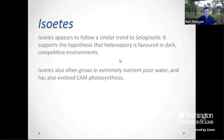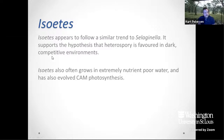Overall, Isoetes appears to follow a similar trend to Selaginella and supports the hypothesis that heterospory is favored in dark, competitive environments. Things in deeper waters with less light availability appear to need larger spores for establishment, and on average Isoetes megaspores are much larger than Selaginella, reaching over a thousand microns much more often. Interestingly, many Isoetes have also evolved CAM photosynthesis, which is quite peculiar.